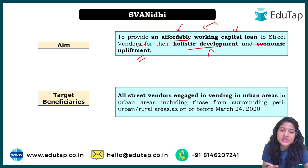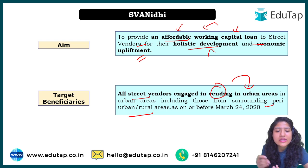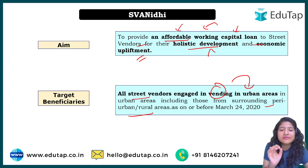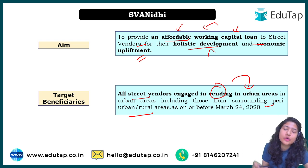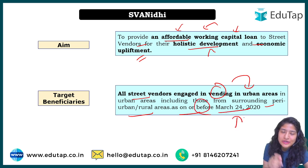The target beneficiaries include all street vendors engaged in vending in urban areas, even though they may be living in peri-urban or rural areas. There is a timeline: we are specifically focusing on street vendors who were affected during COVID time. Therefore, only street vendors who were engaged in this activity on or before 24th March 2020 can be part of the scheme.